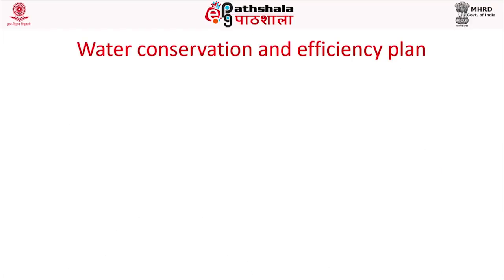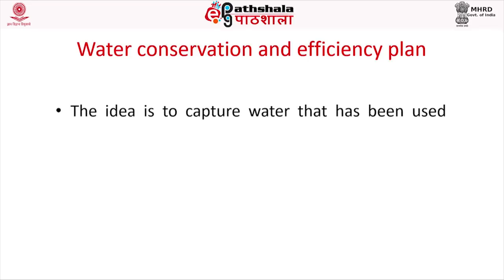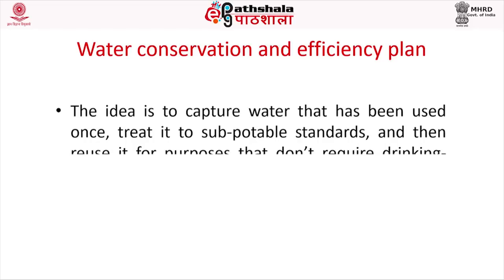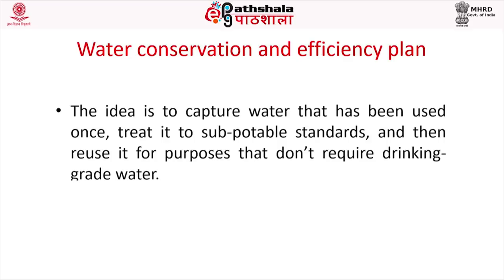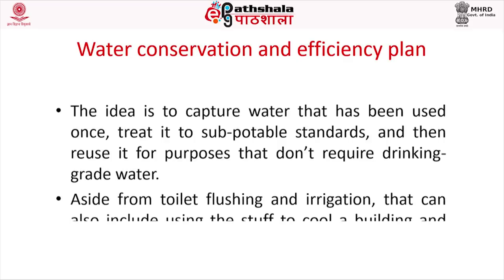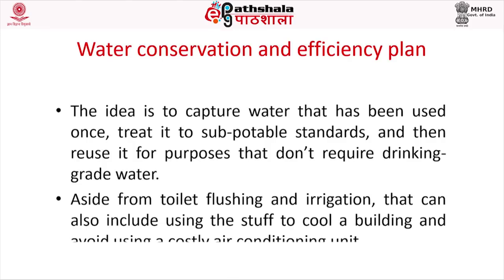The water conservation and efficiency plan aims to capture water that has been used once, treat it to a suitable standard, and reuse it for purposes that do not require drinking-quality water. Aside from toilet flushing and irrigation, this can include using reclaimed water to cool a building and avoid using a costly air conditioning unit.